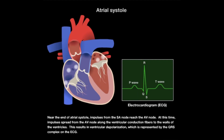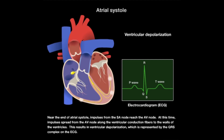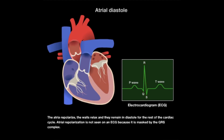Near the end of atrial systole, impulses from the SA node reach the AV node. Impulses then spread from the AV node along the ventricular conduction fibers to the walls of the ventricles. This results in ventricular depolarization, which is represented by the QRS complex on the ECG. The atria repolarize, the walls relax, and they remain in diastole for the rest of the cardiac cycle. Atrial repolarization is not seen on an ECG because it is masked by the QRS complex.